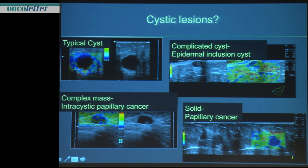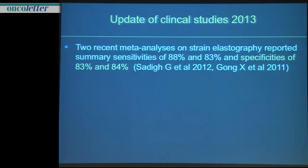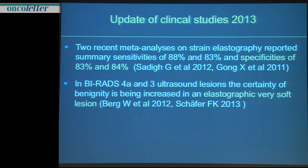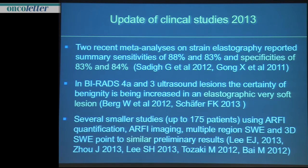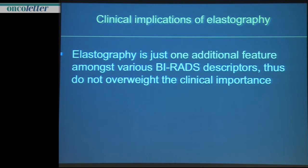This looks like a complicated cyst or maybe a fibroadenoma, but it's completely stiff — and that makes the difference. It looks like maybe a BIRADS 3 lesion, but it's stiff. Then you have to upgrade it, and in this case it was a cancer. We have recent meta-analyses, the study from Wendenberg and Fritz emphasizing that very soft lesions can be downgraded, and several smaller studies focusing on ARFI imaging — all pointing in the same direction: it helps, but it's just one additional feature among all the BIRADS descriptors.